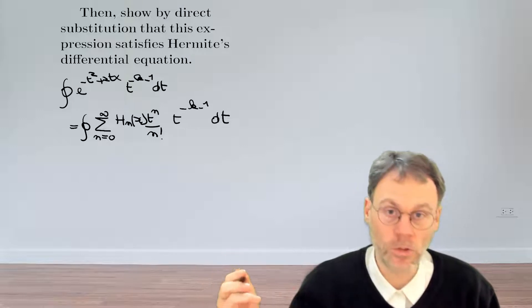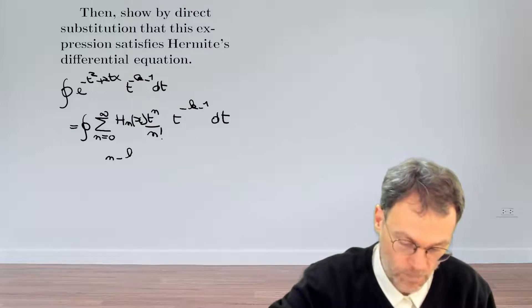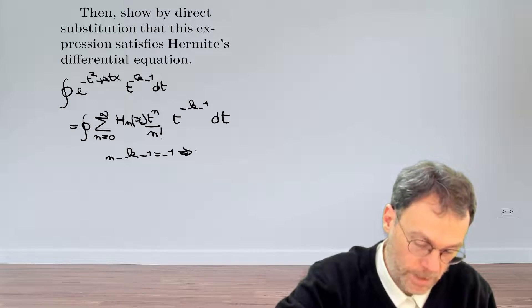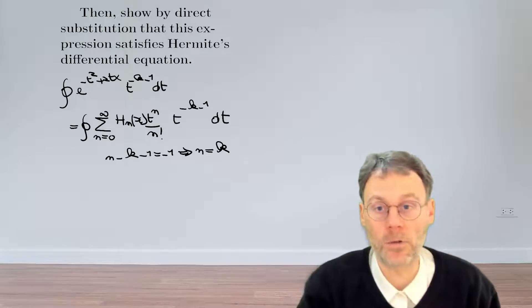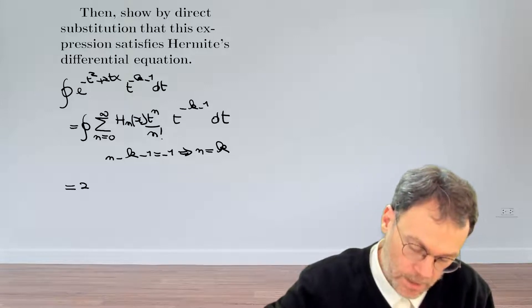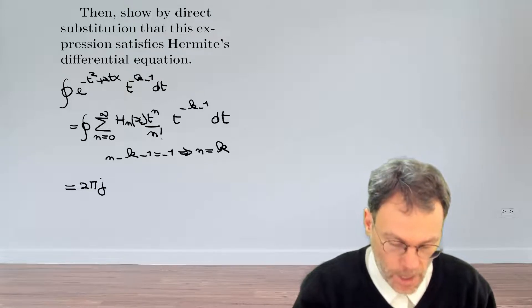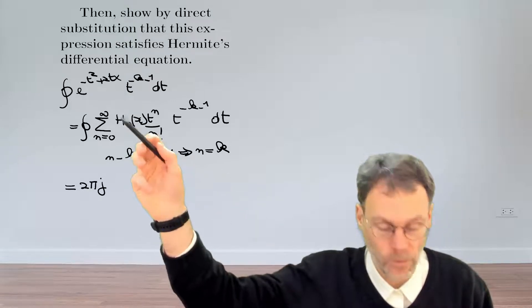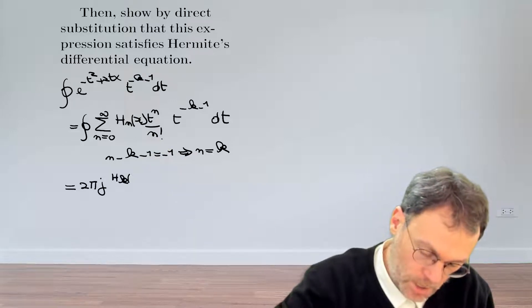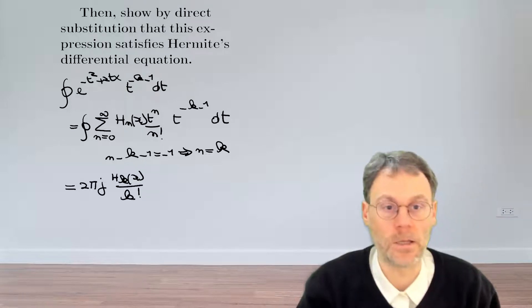The whole summation reduces to a single term, namely the term where the exponent n minus k minus 1 equals minus 1. So we only need to worry about the term where n equals k. In that case we also know that the result of the integral is 2πj. We should not forget the factors in front: H_k(x) divided by k factorial, since n equals k.